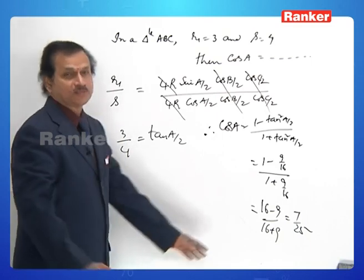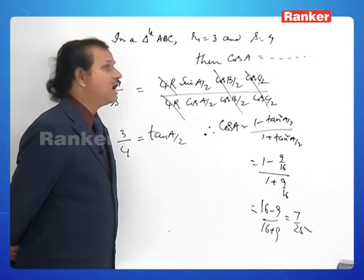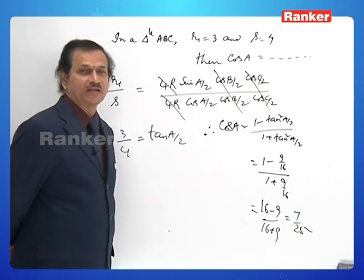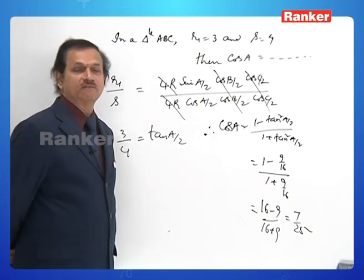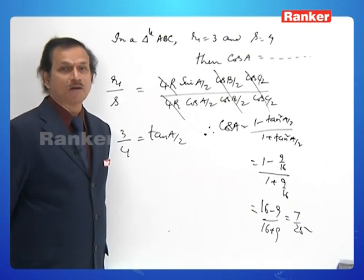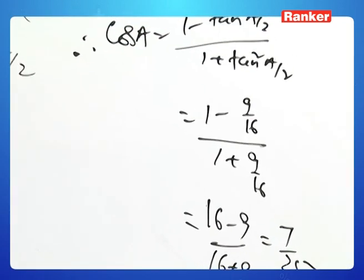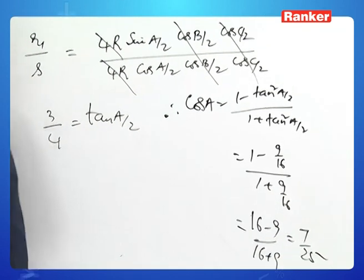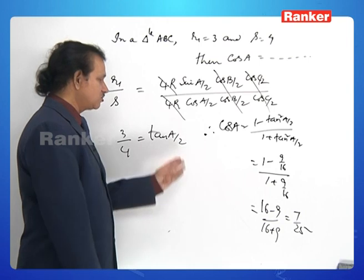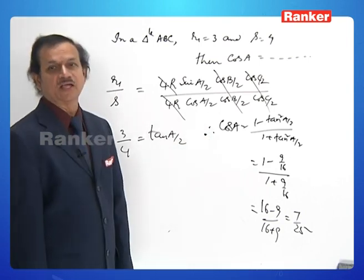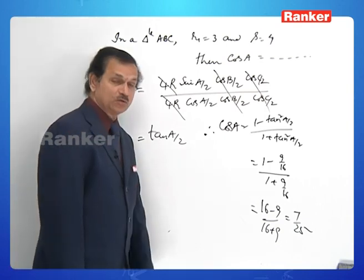There are two ways to find tan(A/2): directly from r₁ = s · tan(A/2), giving 4 · tan(A/2) = 3 so tan(A/2) = 3/4; or via the formula s = 4R · cos(A/2) · cos(B/2) · cos(C/2). Both lead to cos A = 7/25.